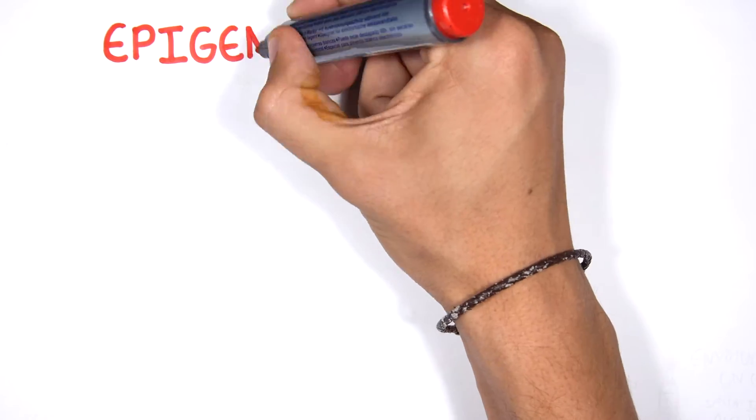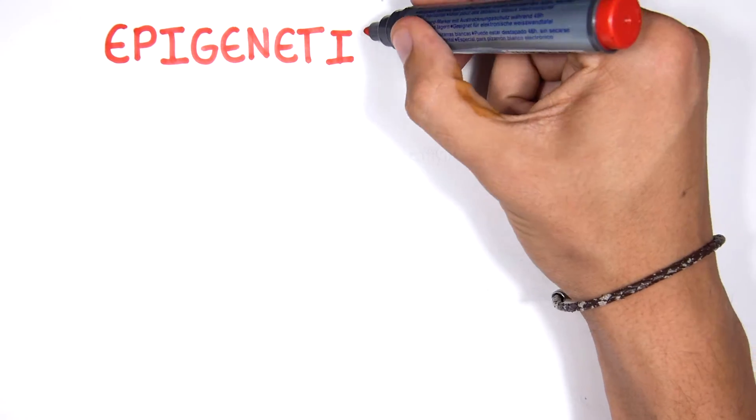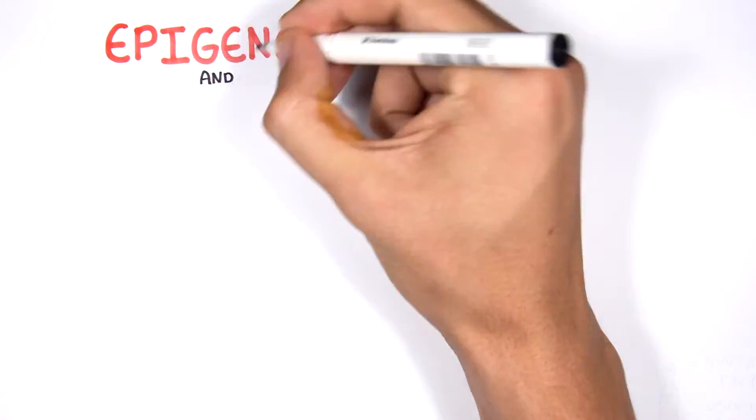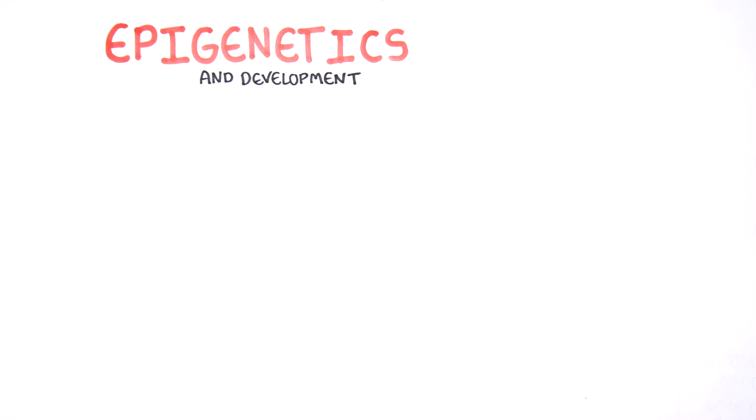Epigenetic modification of the epigenome is established during early embryonic development and is maintained during cell division. In this video we will look at DNA methylation during embryonic development and the influence the environment can have on DNA methylation patterns.